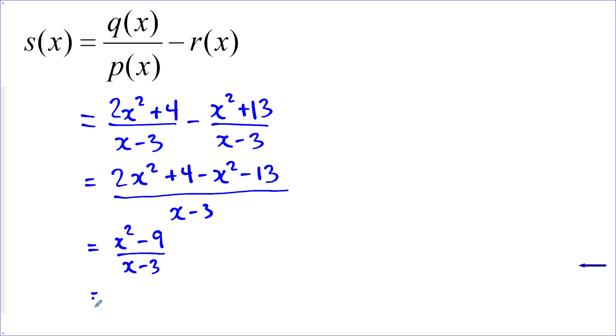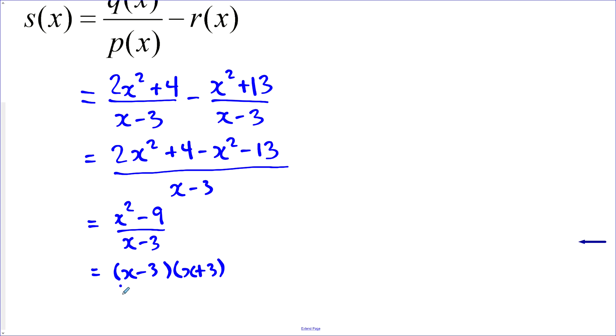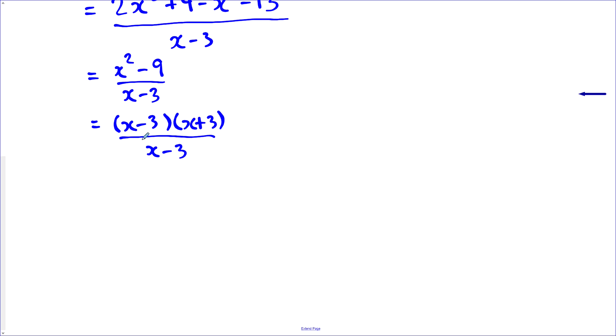Now that looks nice. That's a difference of perfect squares. So we can factor that. x minus 3, x plus 3. And now we can also cancel these out. Before we do, we realize that these are matching factors. And so they're going to create a point of discontinuity at x equals 3. So when we cancel these out, we're left with s(x) is equal to x plus 3. Find our coordinates of the point of discontinuity after we've removed this is s at 3 equals 3 plus 3. That equals 6. So our point of discontinuity is at 3, 6.